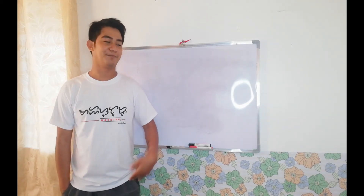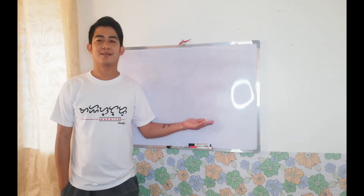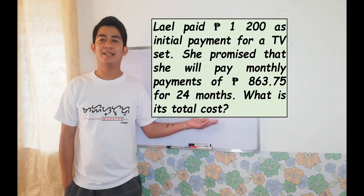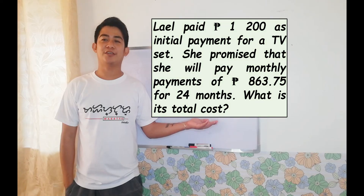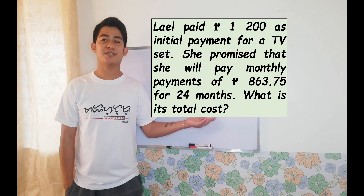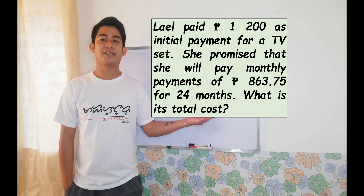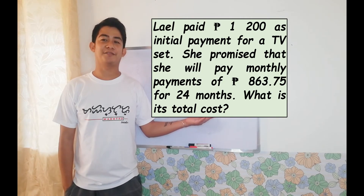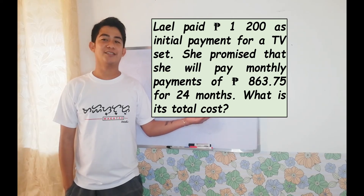Let's solve our word problem. Lael paid 1,200 pesos as initial payment for a TV set. She promised that she will pay monthly payments of 863 pesos and 75 centavos for 24 months. What is its total cost?